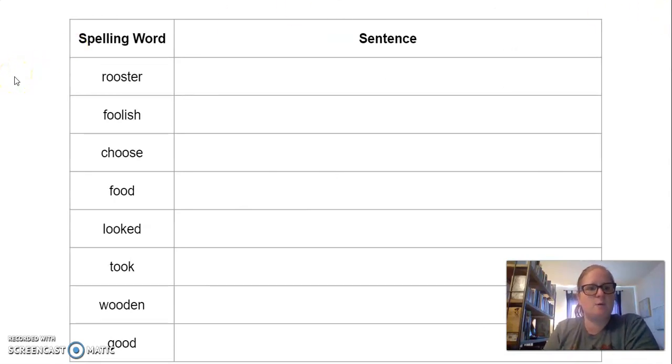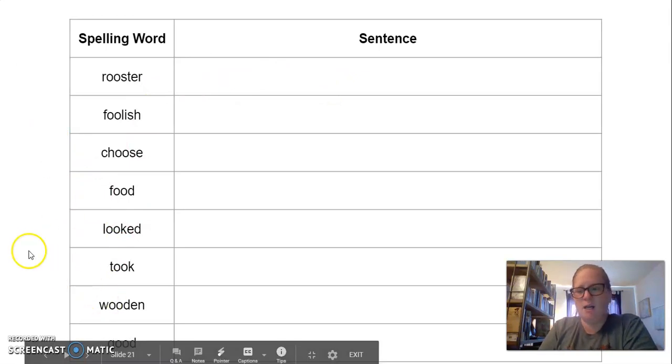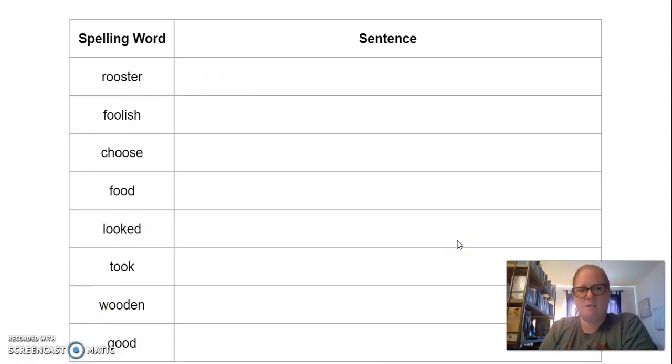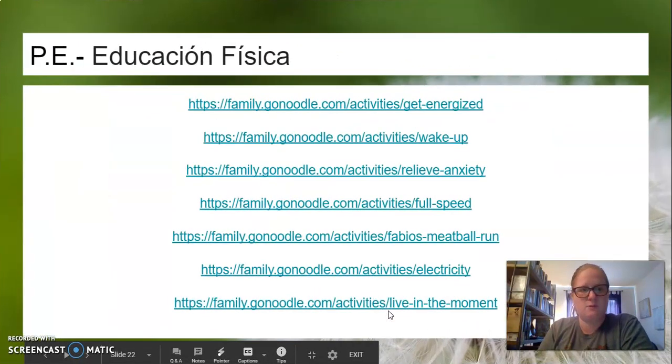Now also, this is I believe your last assignment for today. Here are your spelling words. Rooster, foolish, choose, food, looked, took, wooden, and good. It's a combination of those long double O sounds and the short uh double O sounds. So that is your last assignment for Tuesday.